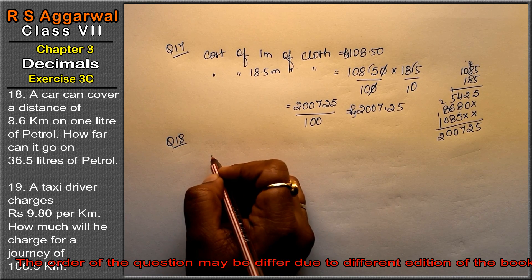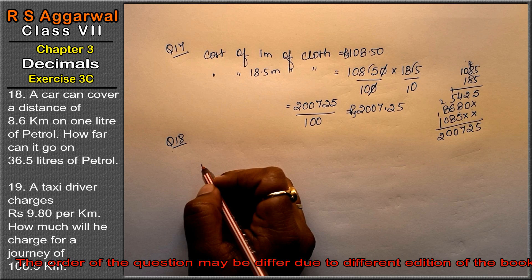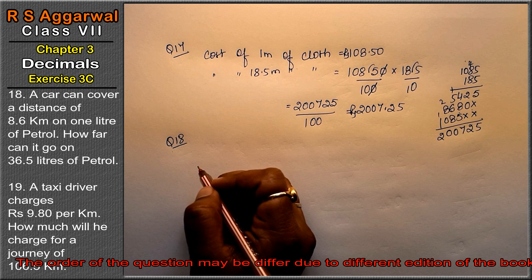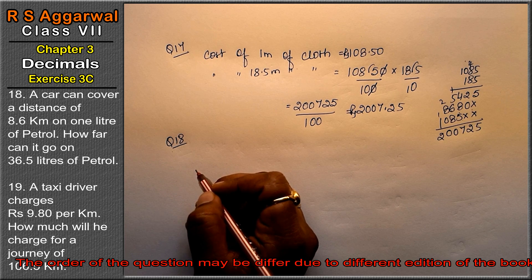Let's do question number 18. Question number 18 is: A car can cover a distance of 8.6 km on 1 liter of petrol. How far can it go on 36.5 liters of petrol?